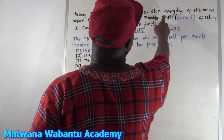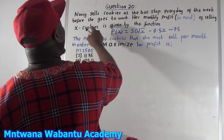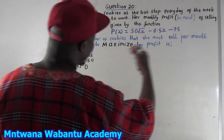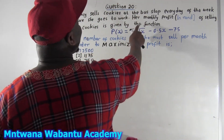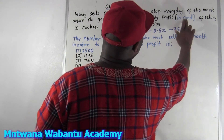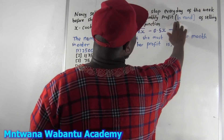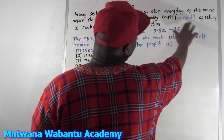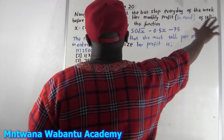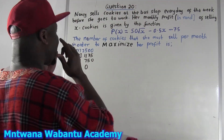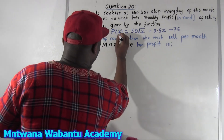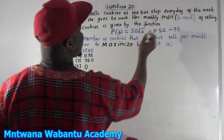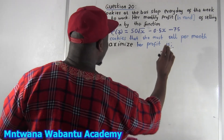Now, she sells cookies at a bus stop every day of the week before she goes to work, and she also sells some cookies after. Her monthly profit function — this can be in dollars, pounds, Tanzania shillings, Nigeria naira, or whatever — is P(x) = 50√x minus 0.5x minus 75, where x represents the number of cookies and P represents profit.